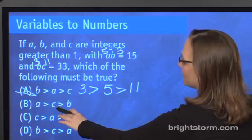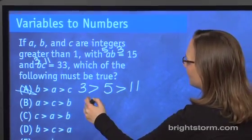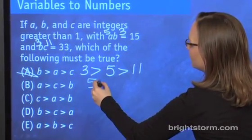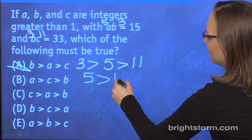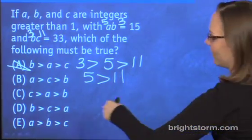b. a is greater than c is greater than b. a is 5, is greater than c, which is 11. We can actually quit here because 5 is not greater than 11.